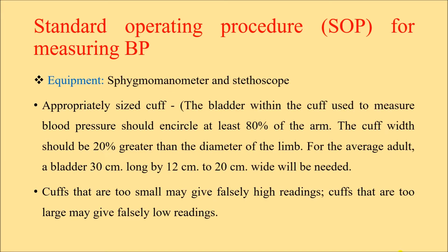Moving on, this is the standard operating procedure, or SOP, for measuring blood pressure — basically how blood pressure is measured, which we learn during first-year physiology classes, but there are certain steps we must be cautious about. The equipment used is a sphygmomanometer and a stethoscope, following the auscultatory method. There are different types — mercury, aneroid, and digital machines. The most important point is the appropriate size of the cuff.